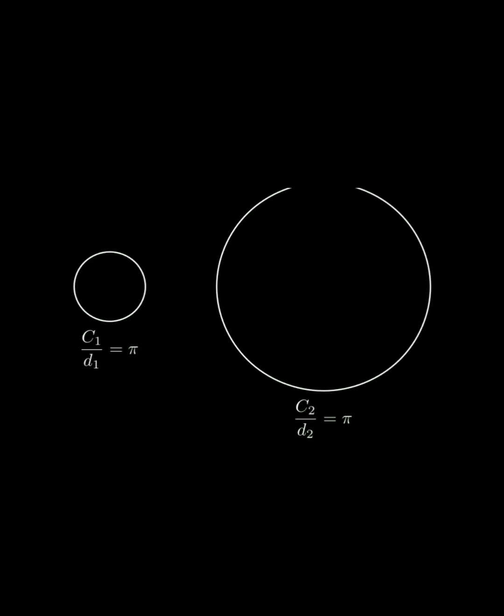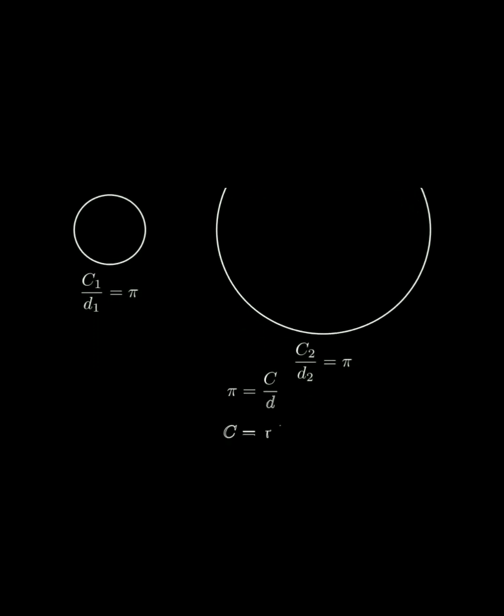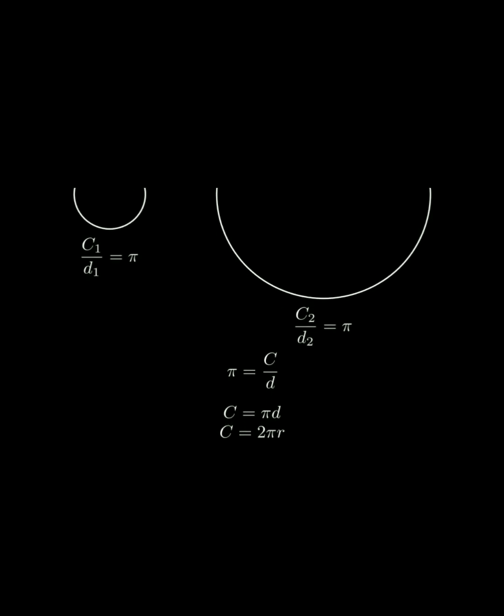This leads us to the circumference formula. Since π equals circumference over diameter, we can multiply both sides by diameter to get circumference equals π times diameter. And since diameter is twice the radius, we can also write this as circumference equals 2πr.